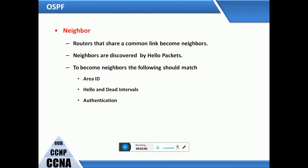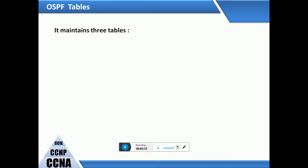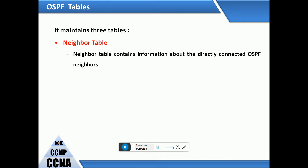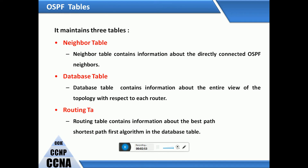Routers that share a common link become neighbors. Neighbors are discovered by hello packets. To become a neighbor, the following must match: area ID and hello intervals. Authentication is also required. Adjacencies are formed once the neighbor relationship is established, and the adjacency database is exchanged. OSPF maintains three tables: the neighbor table, the database table, and the routing table. The routing table contains information about the best path calculated by the SPF algorithm from the database table.